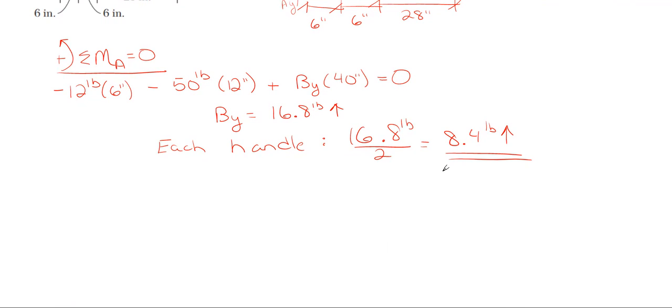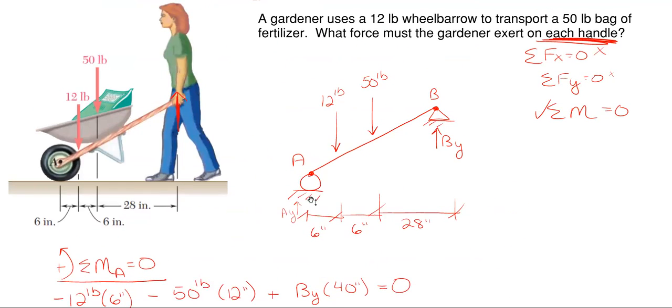This is a reaction problem, and whenever you have a reaction problem, there's always a way to check your answers. How would you check in this case? Typically we would sum moments at the opposite point, the opposite reaction. Since we summed moments about point A, how about we sum moments up here at point B for our check? To do that, we need to determine what A sub y is.